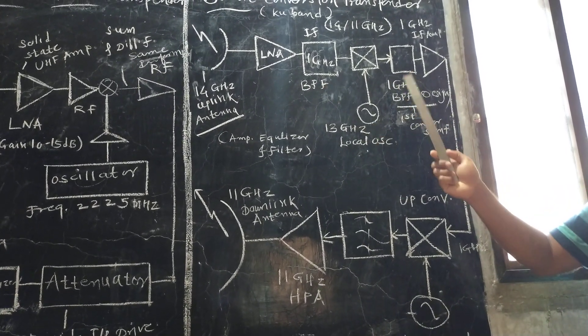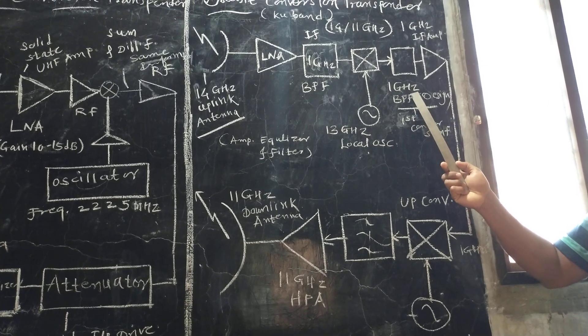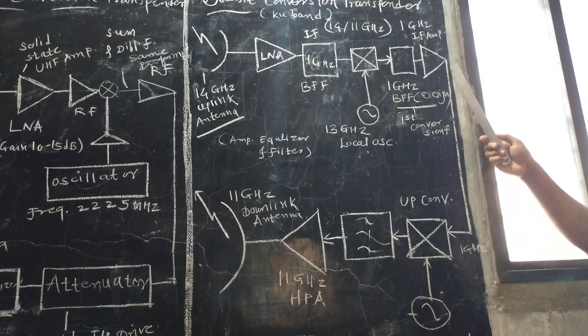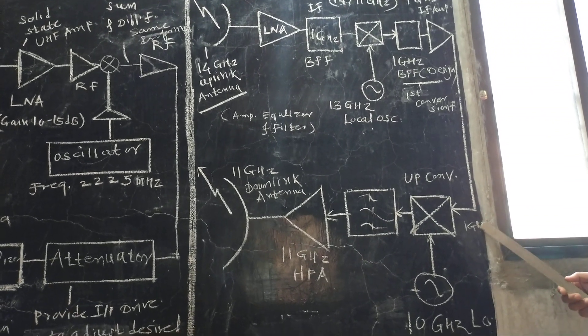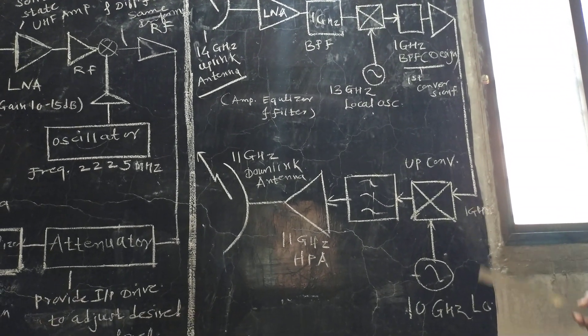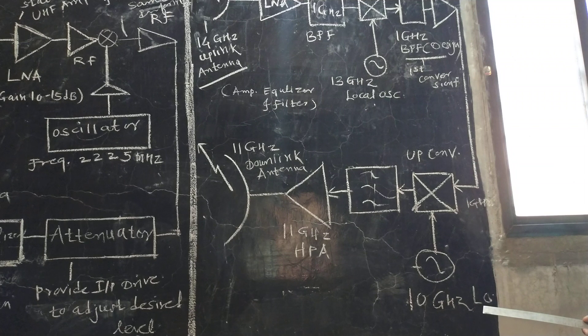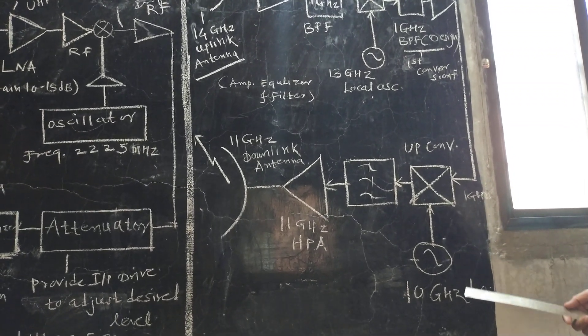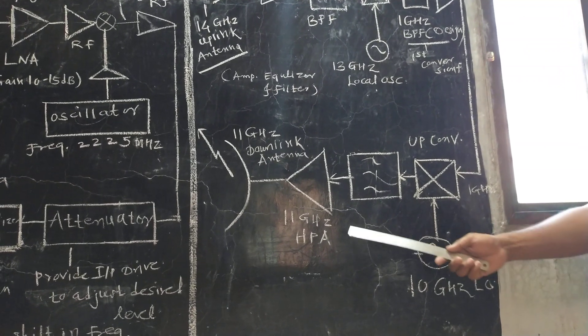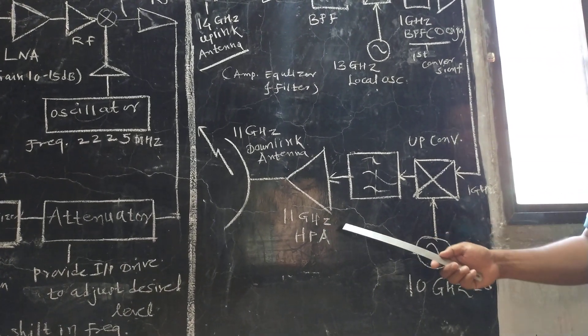From 14 GHz, the 1 GHz frequency is generated. This 1 GHz frequency is mixed with a 10 GHz local oscillator frequency. When mixed, it produces an 11 GHz frequency.